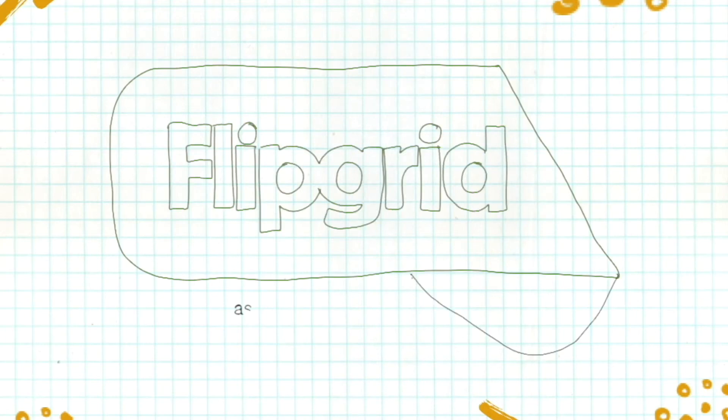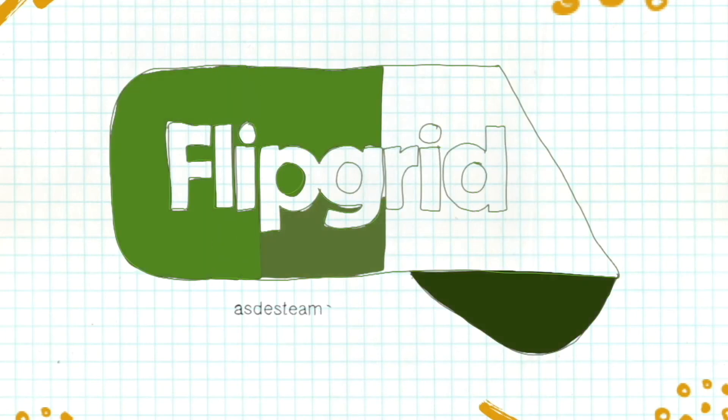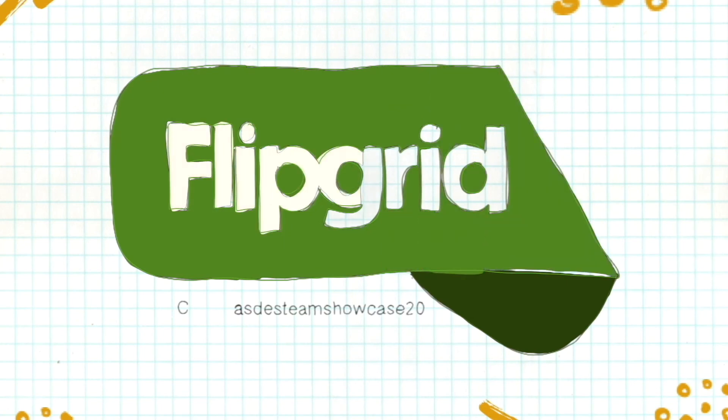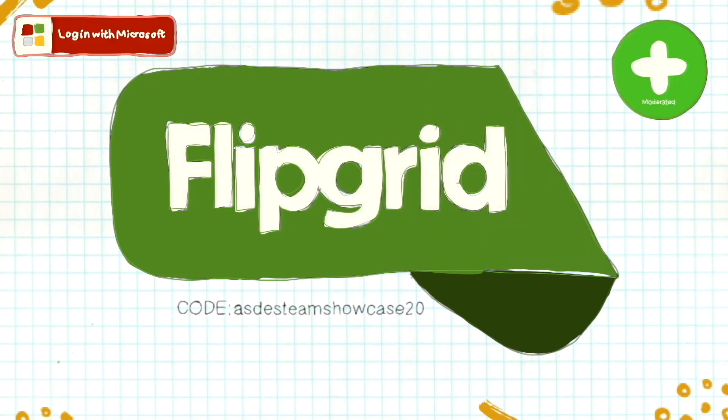Send us your videos by going to flipgrid.com slash ASDE STEAM showcase 20. Click the Microsoft login button, use your school email information, and then click the big green button to upload your videos.